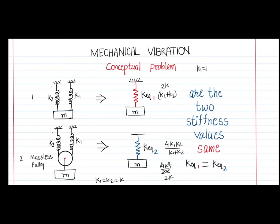So I can finally comment that only when k1 equals k2, k_equivalent_1 will equal k_equivalent_2. Otherwise these two values will not be equal. In addition, for all other values, k_equivalent_2 will be less than k_equivalent_1. I hope you have now understood how to solve a problem involving a pulley, and this is a very important concept. With this note I am closing this session — thank you.